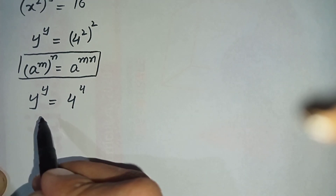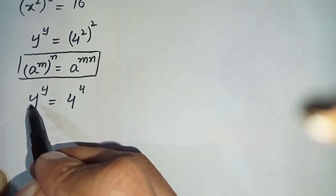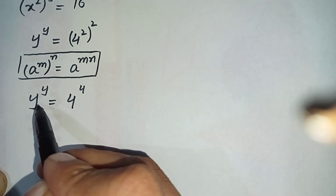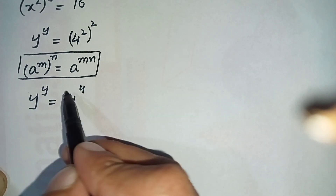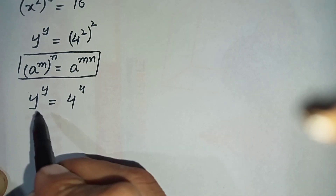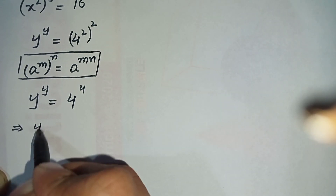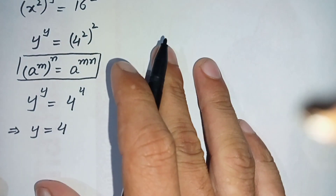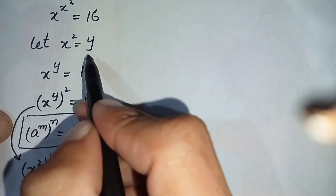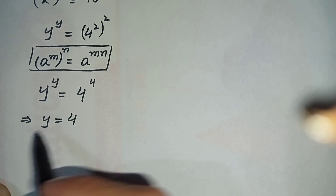Now we will use the mathematical property that when the base is the same on both sides of an equation, we can compare the powers. Here we will compare the powers, which implies that the value of y is 4.